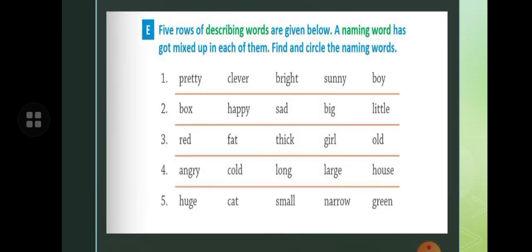Next children. Next exercise is E. Five rows of describing words are given below. A naming word has got mixed up in each of them. Find and circle the naming word. You have to circle the naming word.